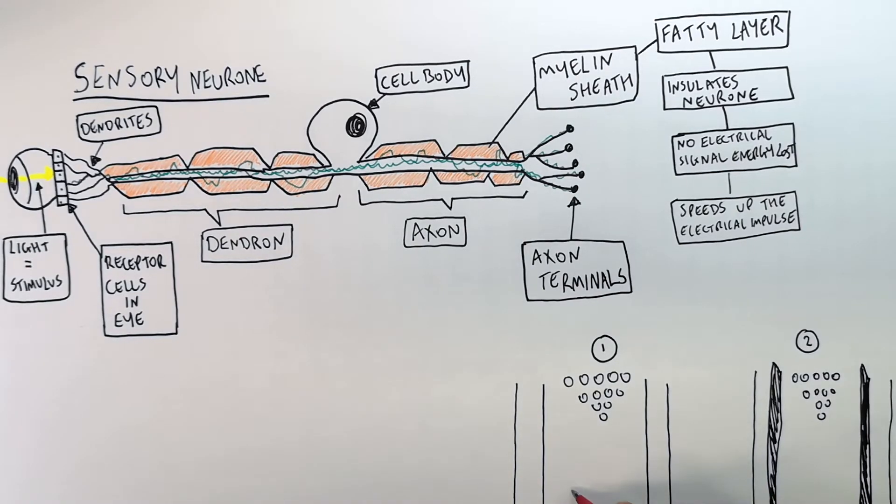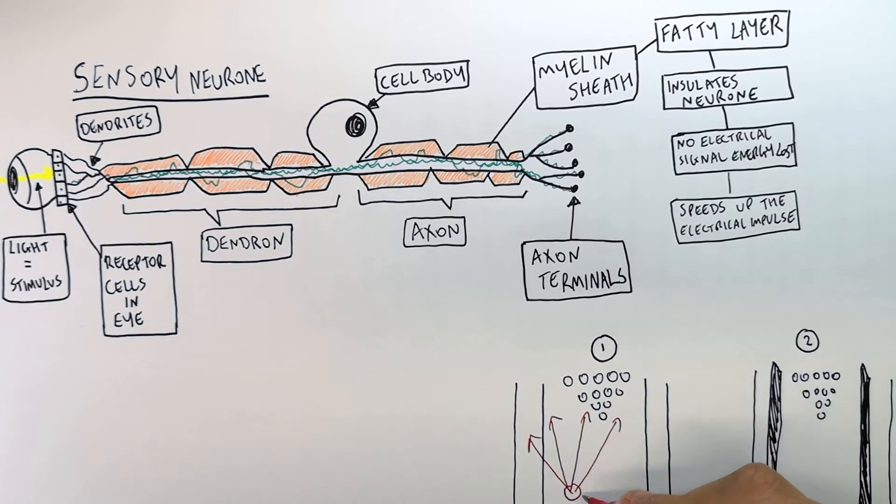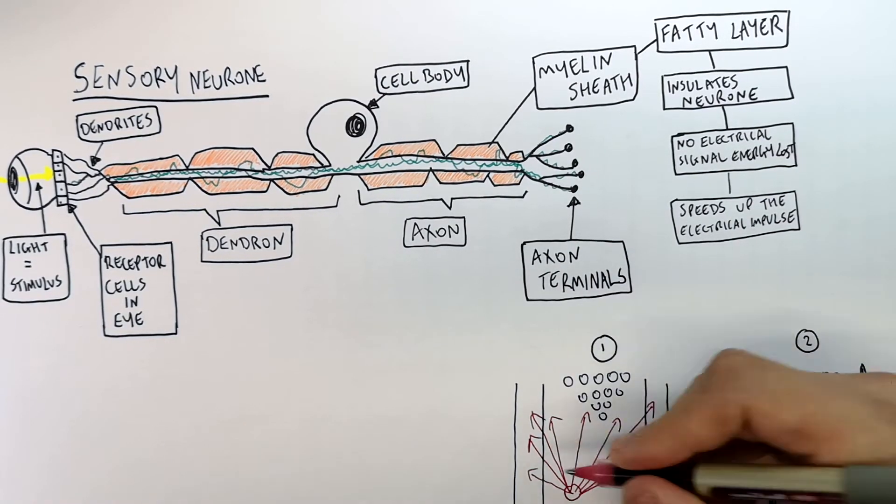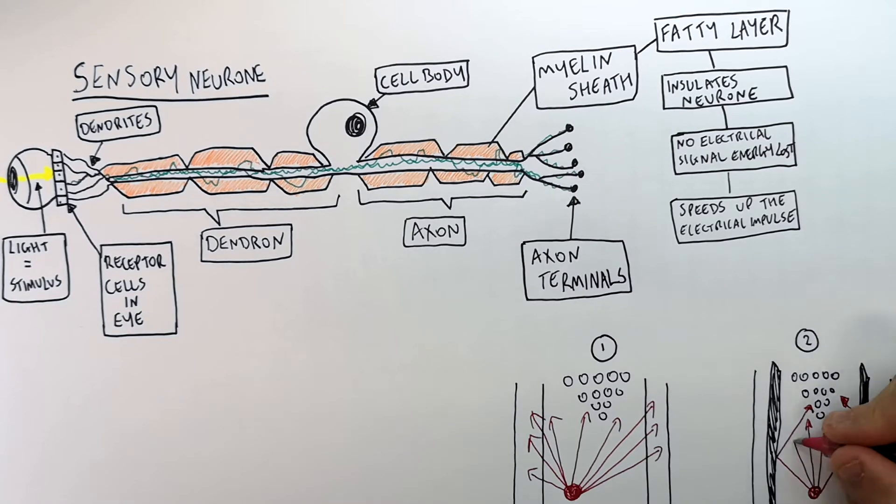So when you throw the balls down side number one as you can see here some of the balls will get to the end but a lot of them will be lost. So the electrical impulse is being lost without the myelin sheath. Whereas on side number two the sides up no matter where the ball goes it ends up at the end because the sides are up and it is insulating the neuron.